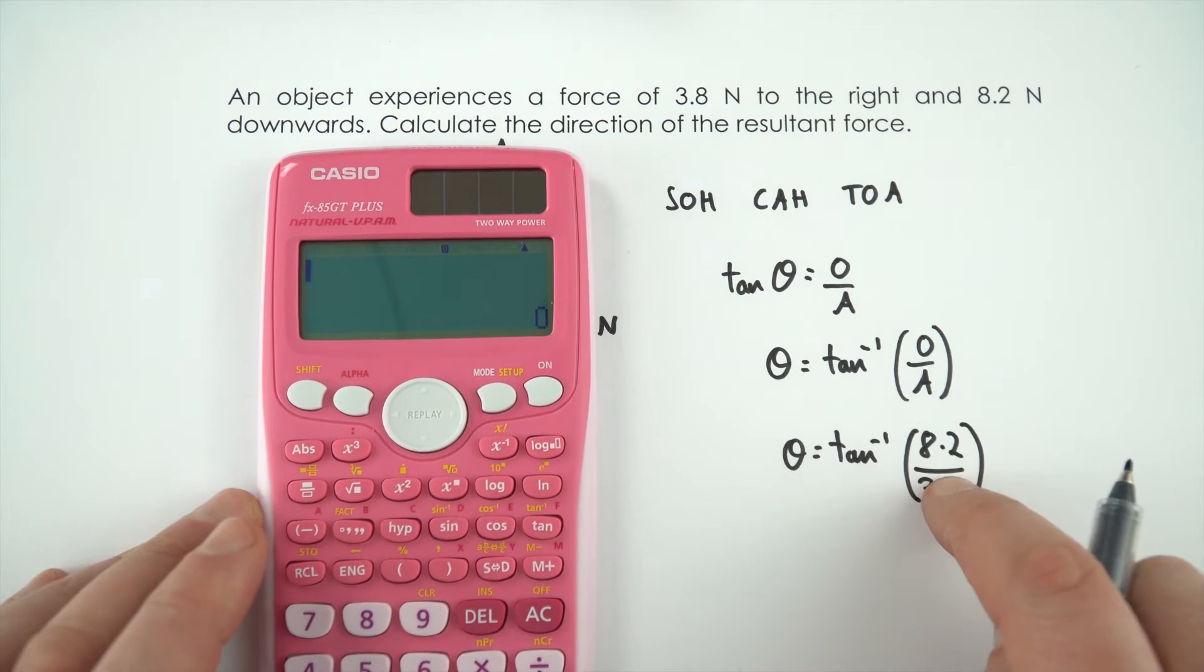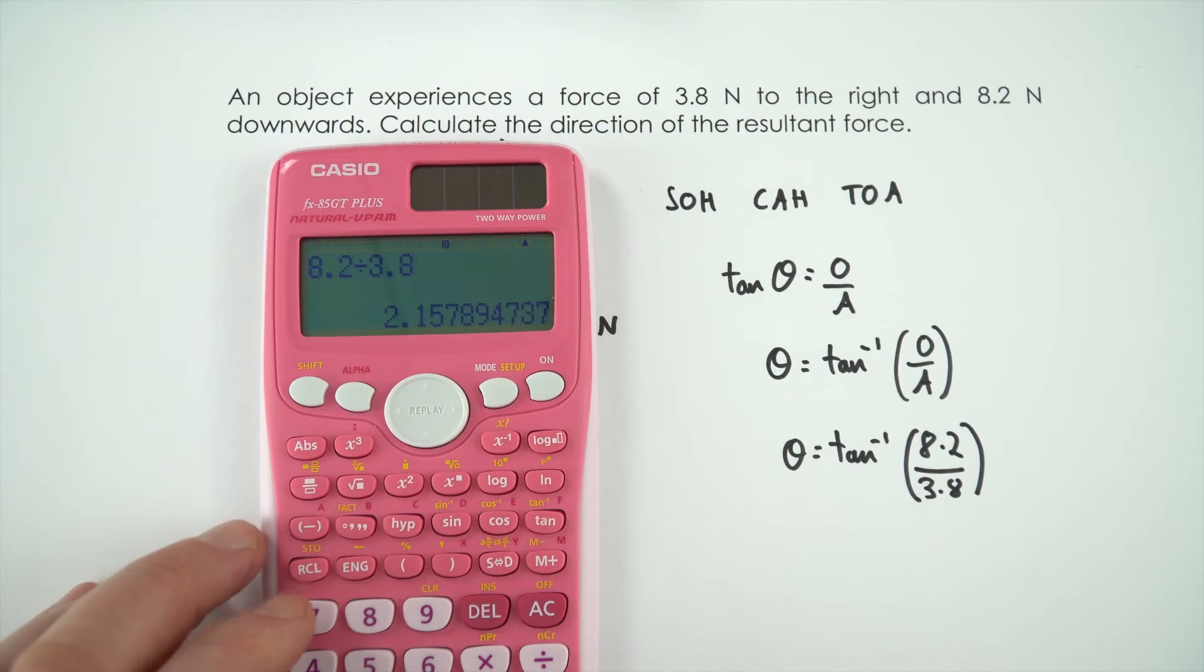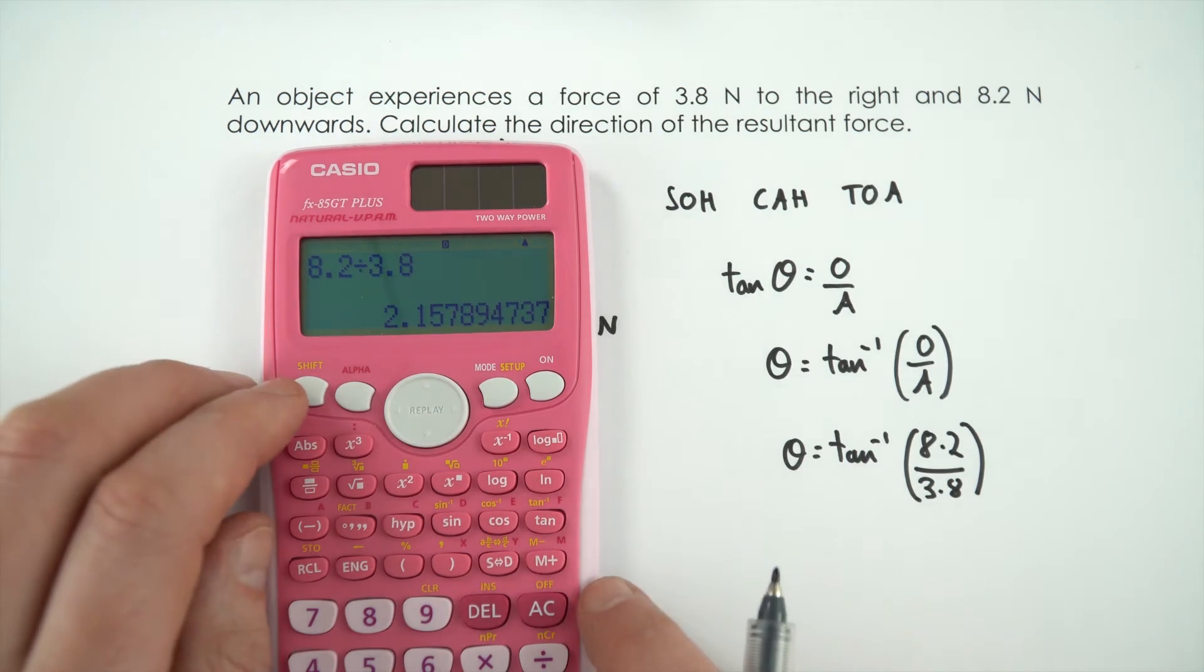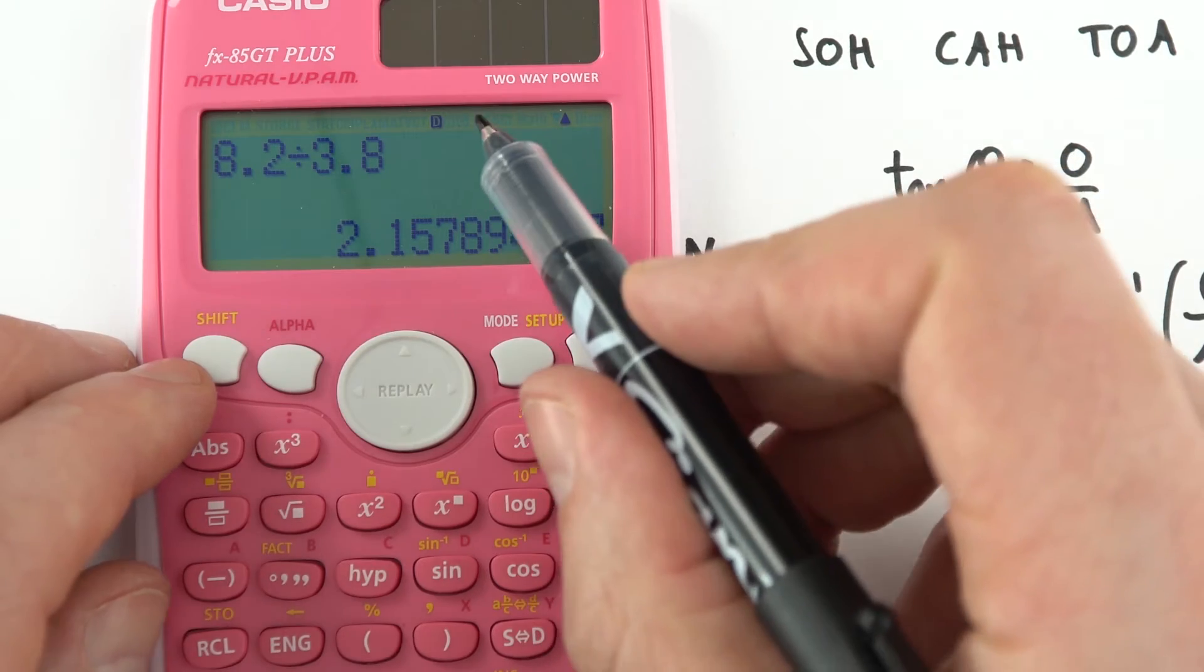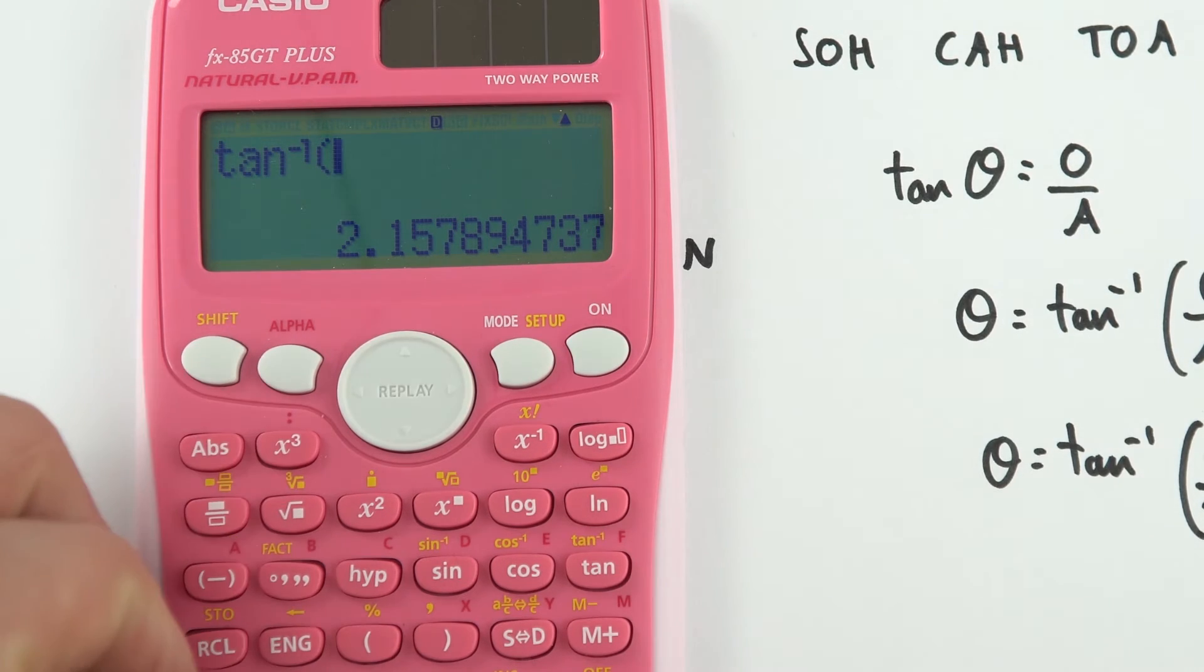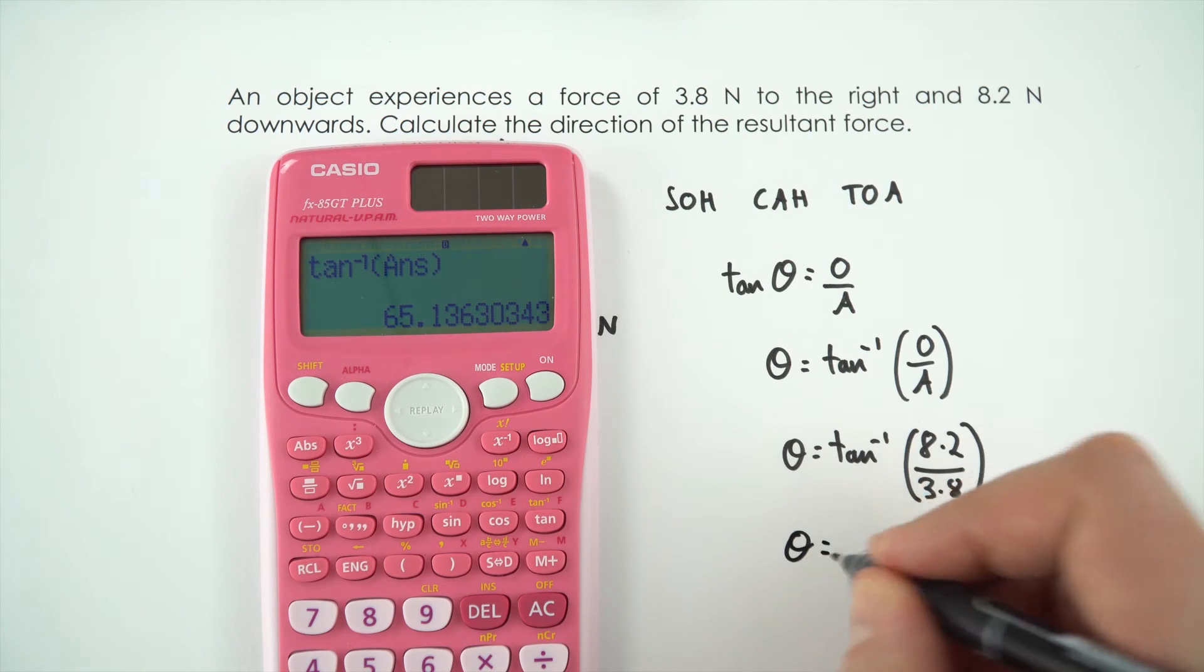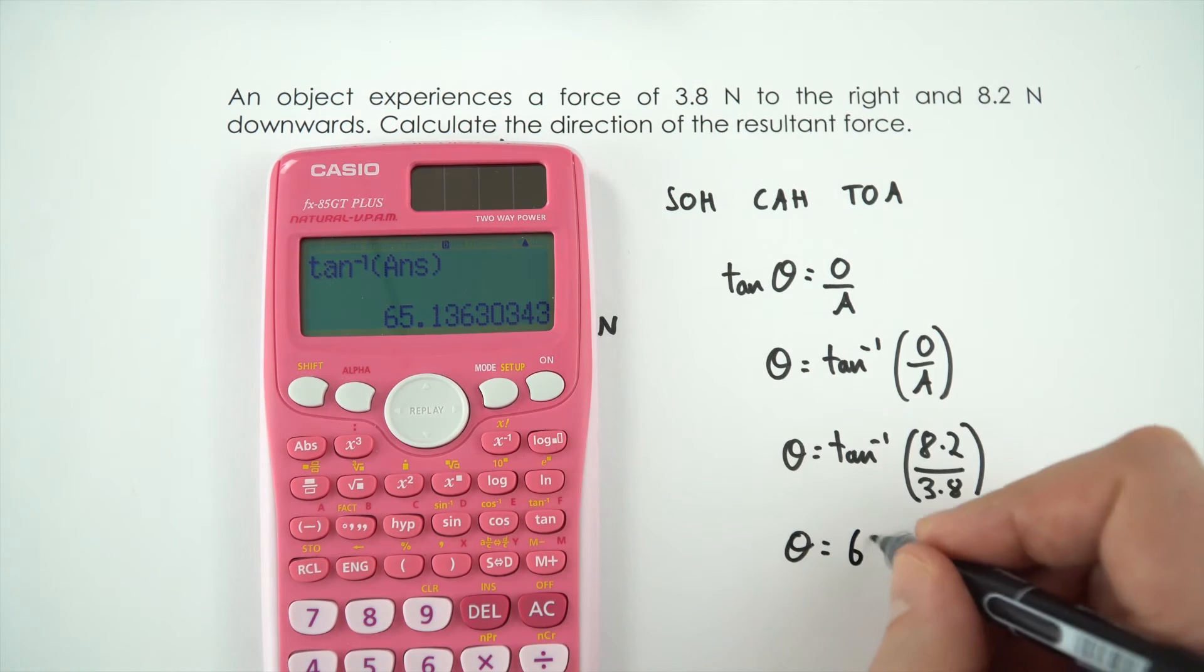I don't think anybody knows that in their head. So 8.2 divided by 3.8 is 2.15. Checking the calculator's in decimal mode, I'm going to do inverse tan of my previous answer, which gives the value of theta equal to 65 degrees.